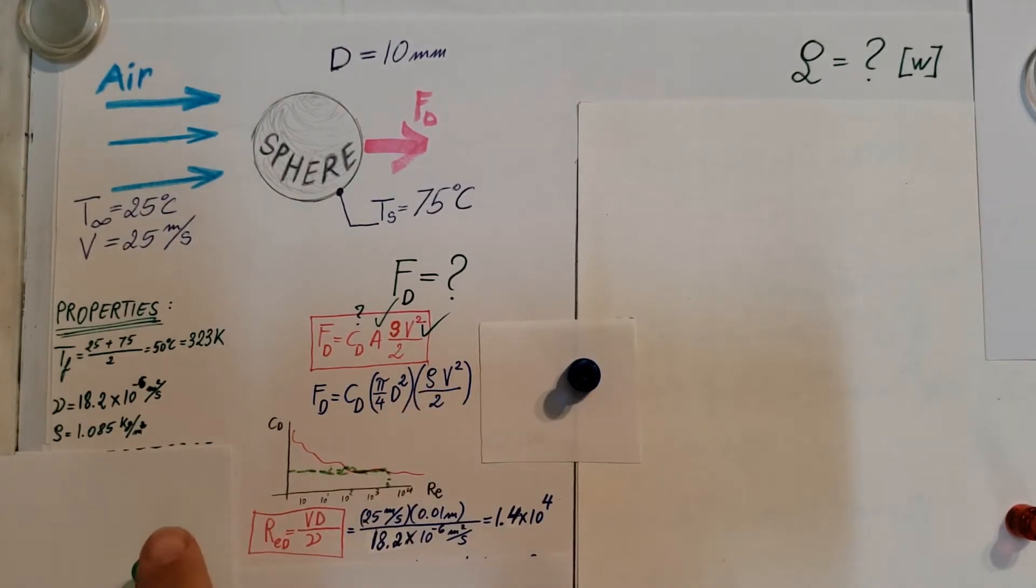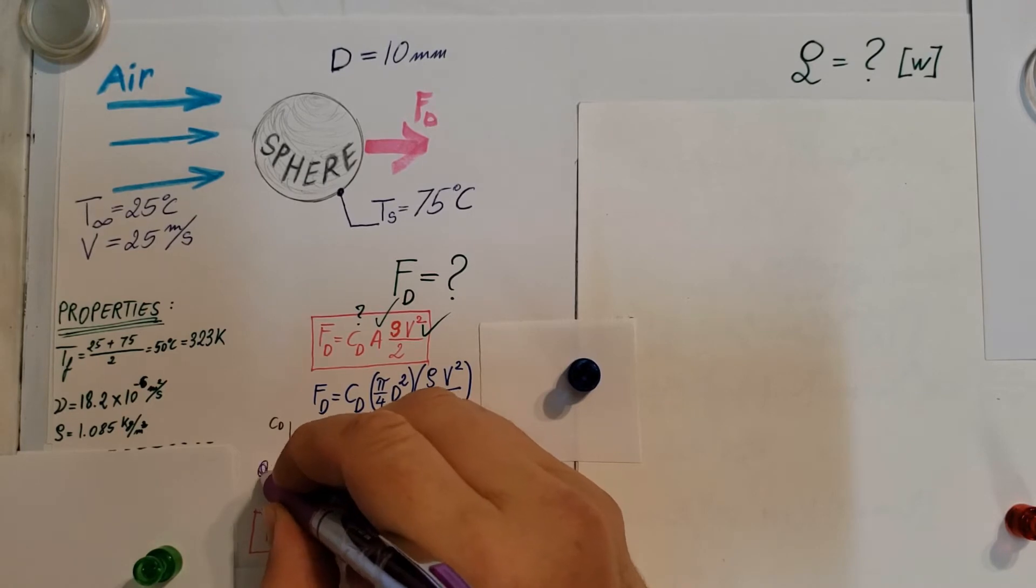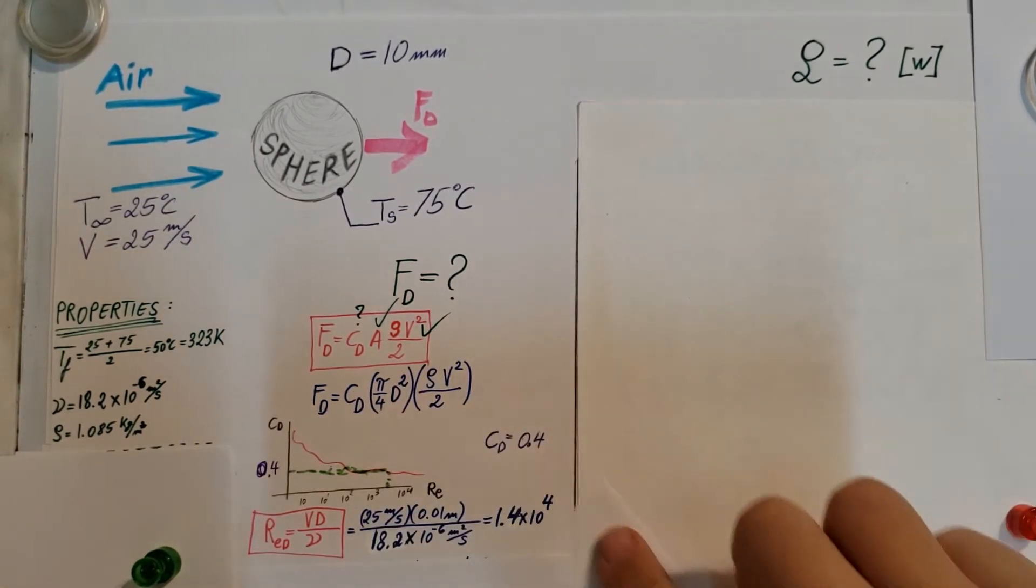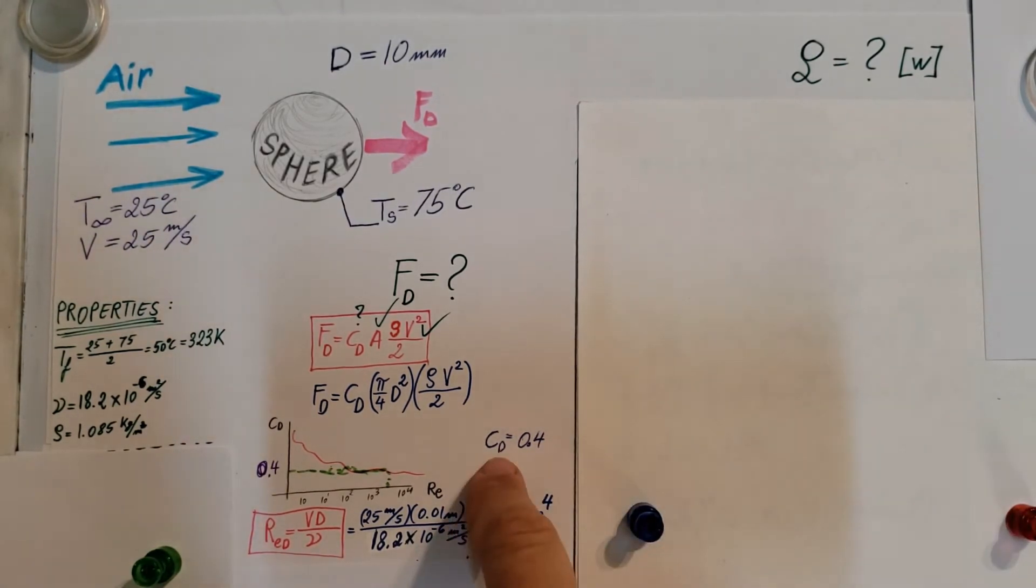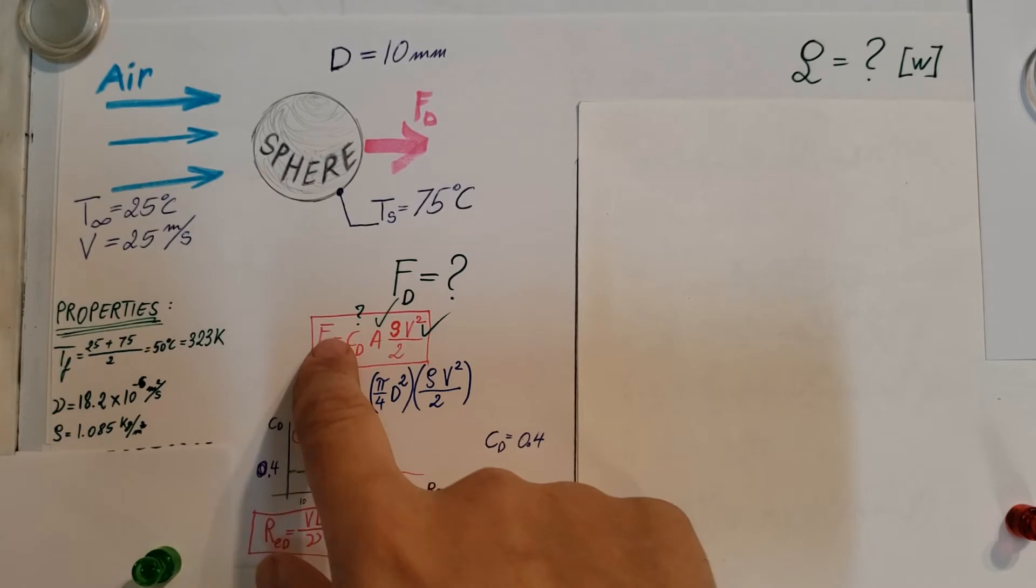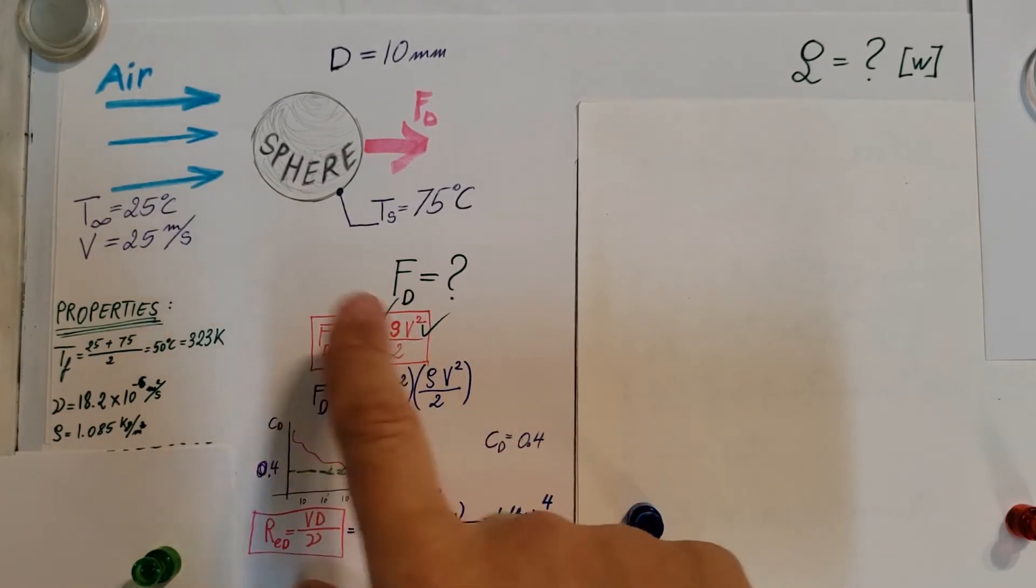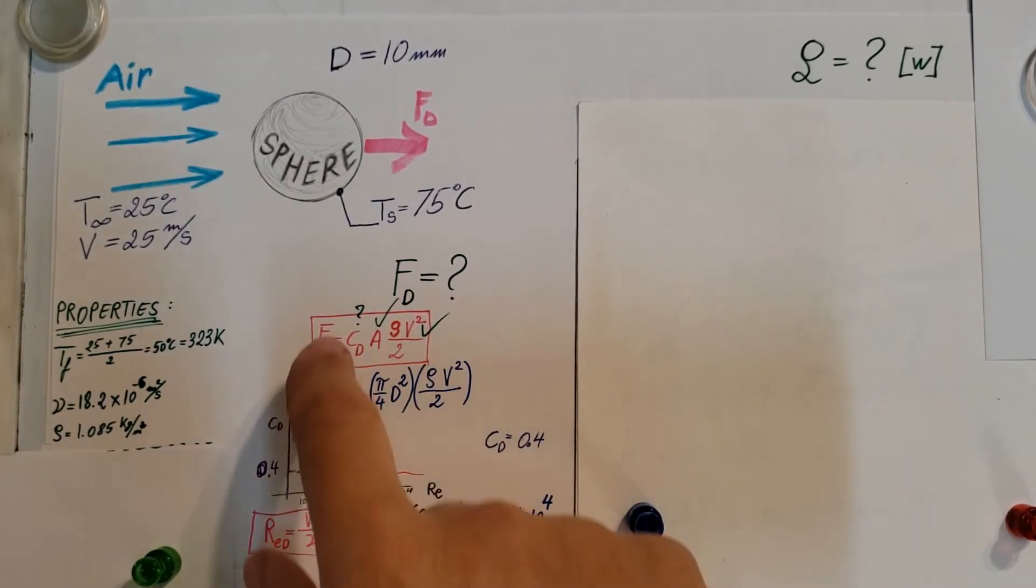So where were we? Reynolds number, look on the chart, and it's going to give me a drag coefficient of 0.4. I marked it right here too so we can see it. There you have it. Now we finally have this guy and if you look at our formula we have everything we need. Right now we can go ahead, plug in everything we have, and find our value.